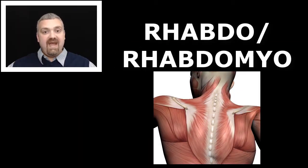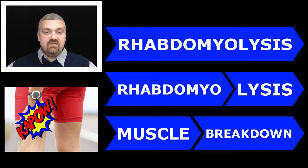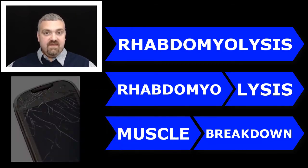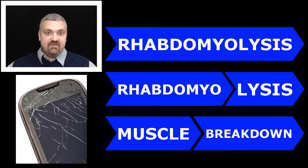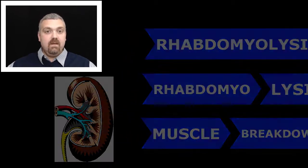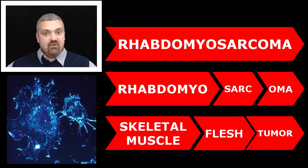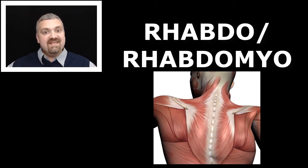Next we have rhabdo or rhabdomyo, which means striated skeletal muscle. Rhabdomyolysis — rhabdomyo means muscle, lysis means to break down or split apart. So rhabdomyolysis is when you have muscle damage and cells break down releasing their contents into the bloodstream, which can have catastrophic implications at the kidneys, potentially causing renal failure. Next, rhabdomyosarcoma — oma means tumor, so a sarcoma is a cancer of soft tissues, and a rhabdomyosarcoma is a type of sarcoma that starts in skeletal muscle.